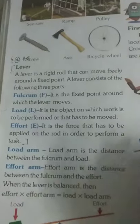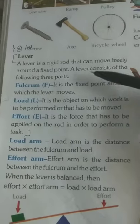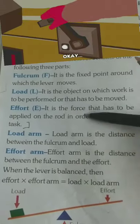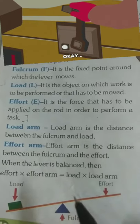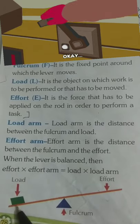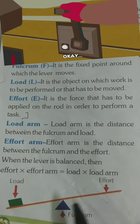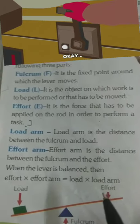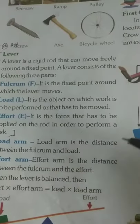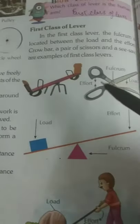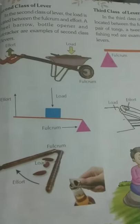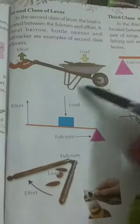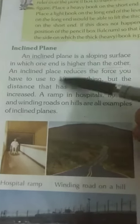Then we discussed six types of simple machines. A lever has three parts: fulcrum, load and effort. We discussed the load arm — the distance between the load and fulcrum — and the effort arm — the distance between effort and fulcrum. In the case of levers we discussed three types: first class lever, second class lever, and third class lever.